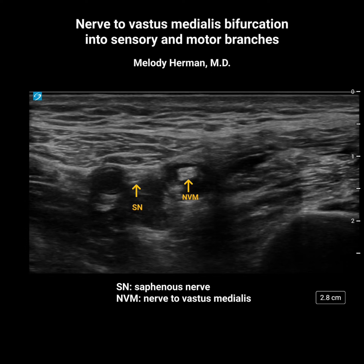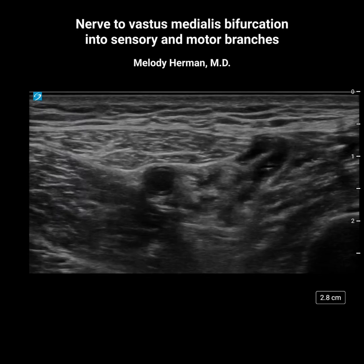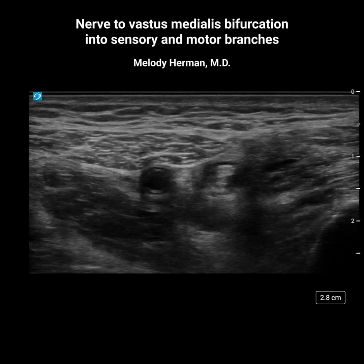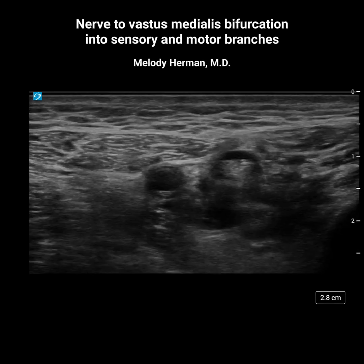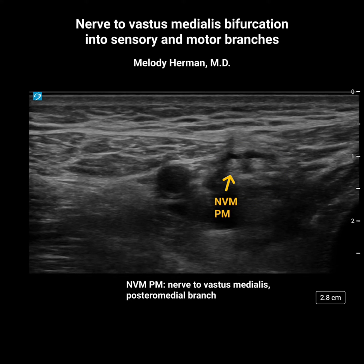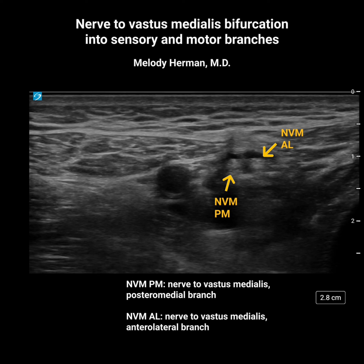What was interesting to me about this particular block was the post-block scan. As we scan distally down the thigh, we get to the apex of the femoral triangle where the medial border of sartorius meets the medial border of adductor longus. Scanning a little bit further distally, you can see that the nerve to vastus medialis has divided into two branches: a posterior medial branch which is primarily sensory,